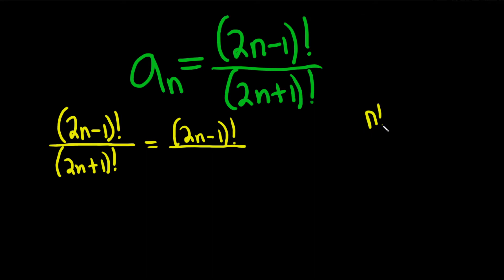So recall that n factorial, how you do it is you just write down n and then you just keep subtracting 1. So it's n minus 1 and then n minus 2 dot dot dot 3, 2, 1. You just keep subtracting over and over again.